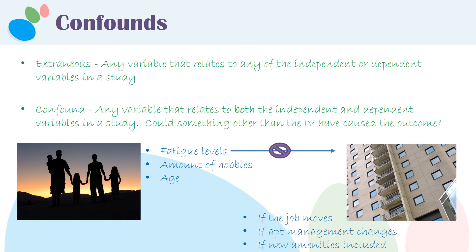The next one is the amount of hobbies. We already established that that's related to the independent variable. Is it related to the dependent variable? Would the amount of hobbies somebody has influence whether they move out of an apartment complex? Again, probably not. That's probably just an extraneous variable.